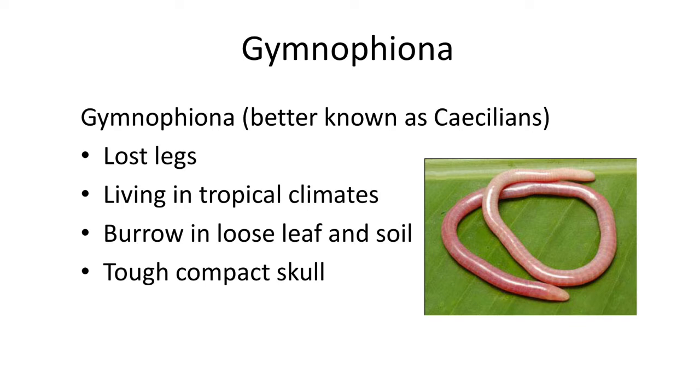The Gymnophiona, better known as the caecilians, are legless amphibians that live in tropical climates. They burrow in loose leaf litter and soil, and are often not seen on the surface. They look a lot like brightly colored earthworms, with tough compact skulls and tiny eyes — many being blind. They are found in Central and South America, Southeast Asia, and West and East Africa, in dense tropical wet forests. Both living and fossil forms are not found in Australia, which may mean they originated globally only after the separation of Australia during the late Jurassic.